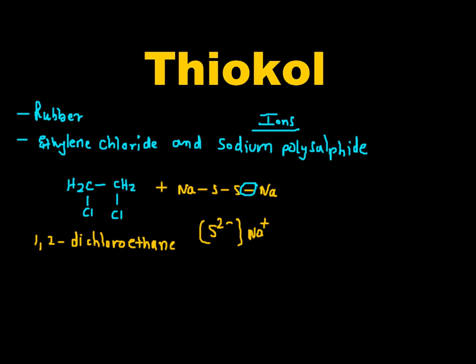Again, we take Cl-CH2-CH2-Cl (1,2-dichloroethane) and here we carry out the polymerization reaction with sodium polysulphide.